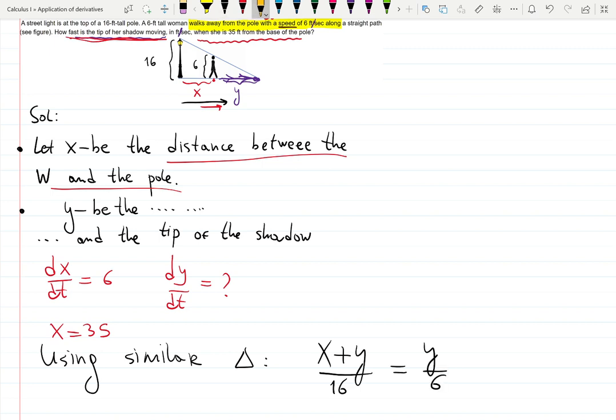Did you catch the two triangles idea? The big triangle is over here. The smaller triangle is over here. x and y, 16 and 6.